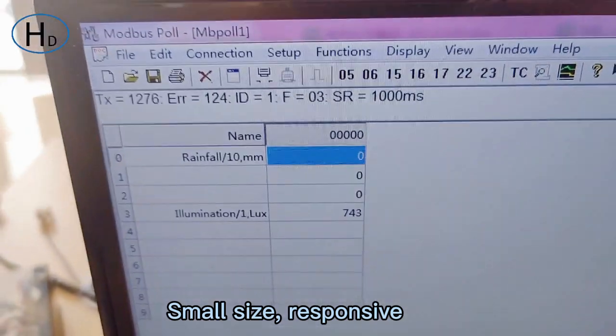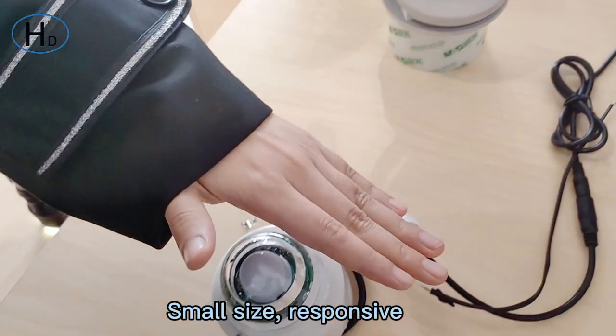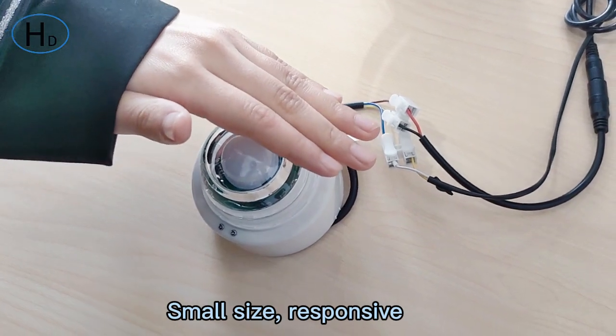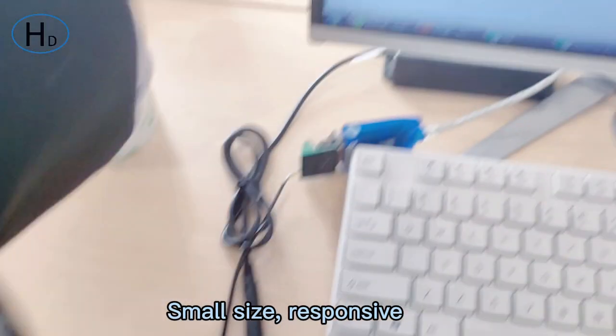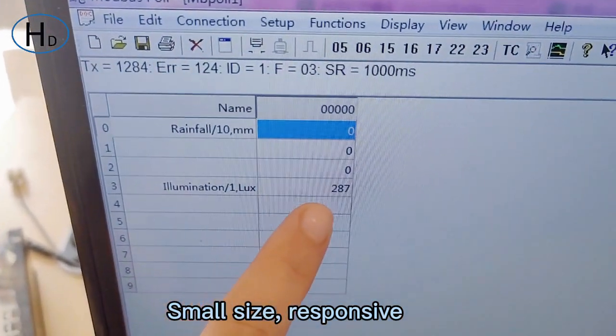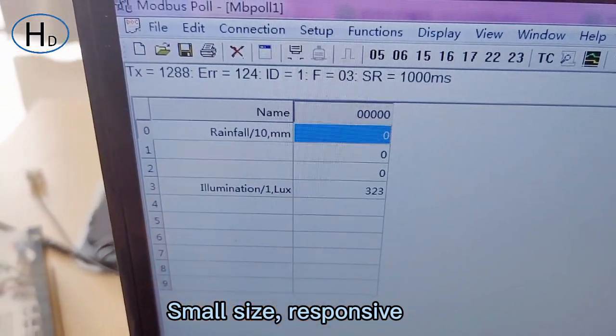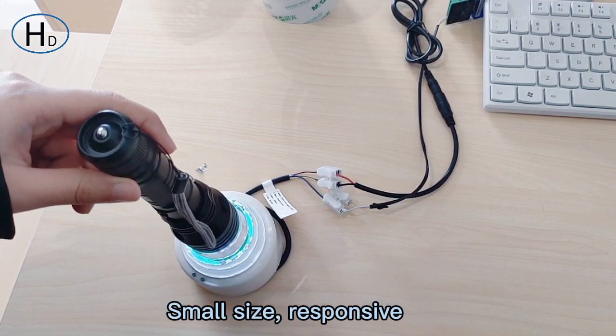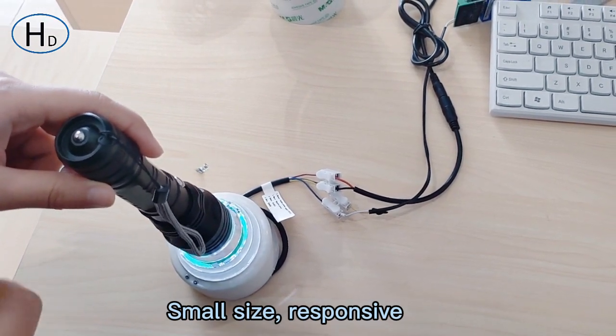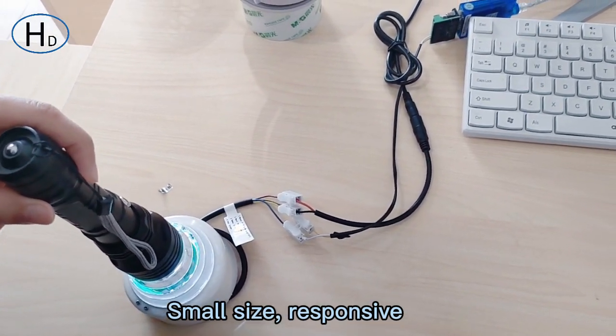When I block the sunshine, we can view the real-time data. The illumination is 233 lux. Then when I shine the flashlight on the optical sensor, we can view